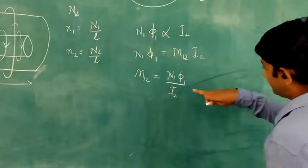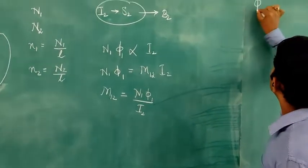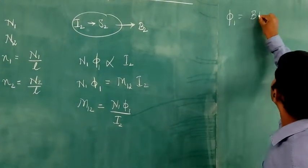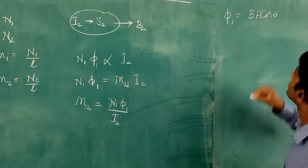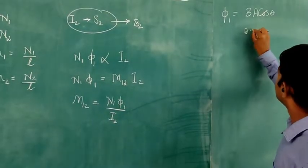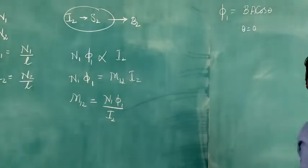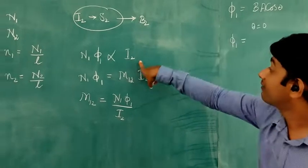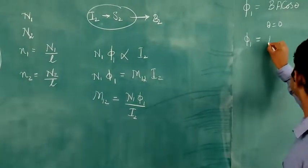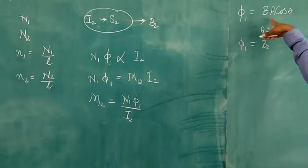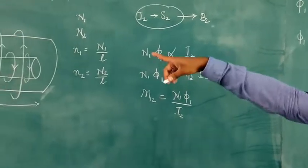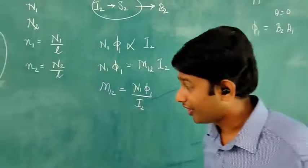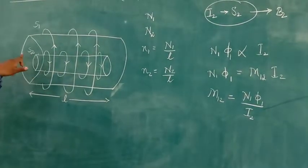Now let us find φ1. The magnetic flux is given by φ = BA cosθ. Since θ equals 0, cos 0 is 1. So φ1 equals B2 times A1, where A1 is the cross-sectional area of solenoid S1. Since the solenoid is circular, A = πR², so φ1 equals B2 × πR1².